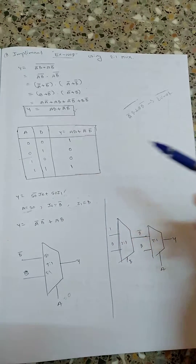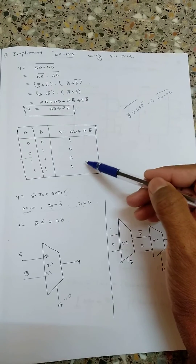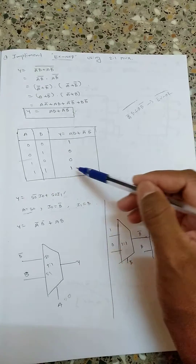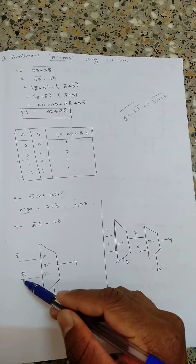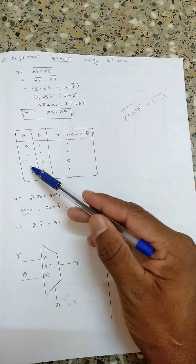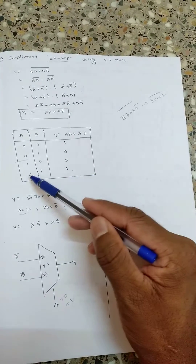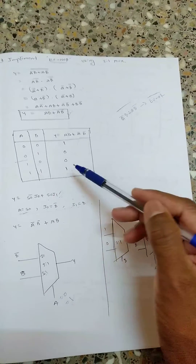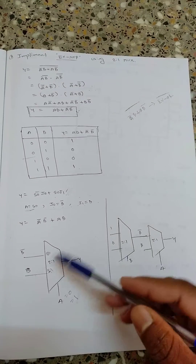In the second part, when A = 1 the output follows B directly — if B is 0 the output is 0, if B is 1 the output is 1. So I directly connect B to I_1. Whenever A = 1 it selects I_1, and since I_1 = B: if B = 0 output is 0, and if B = 1 output is 1. So the XNOR gate is easily implemented.